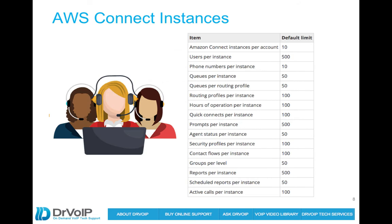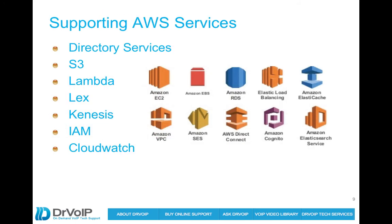Instances have certain limitations, but with AWS it's often possible to call them and request more — for example, more than 10 instances per account or more than 500 users. There are a set of limits within the contact center to pay attention to. Supporting services for this build-out include S3, Lambda, and Lex. You can also integrate with Active Directory for single sign-on and use CloudWatch for tracking and reporting. If you're not familiar with AWS, don't worry about this right now, but as we add sophistication later on, you'll want to learn more about these AWS services.